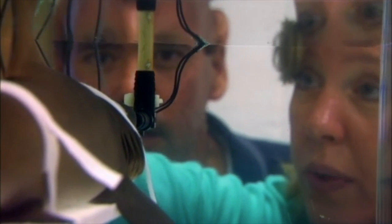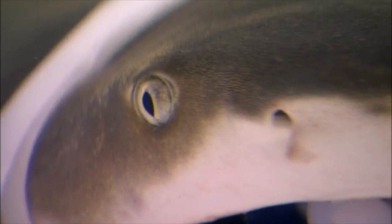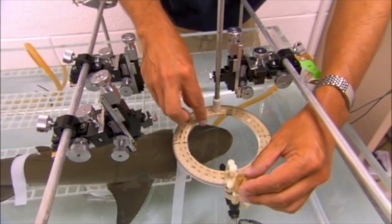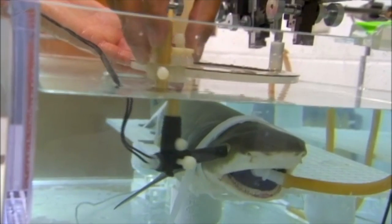Great Whites are far too big for this kind of research. Scientists use smaller sharks and estimate the results for a giant Great White.